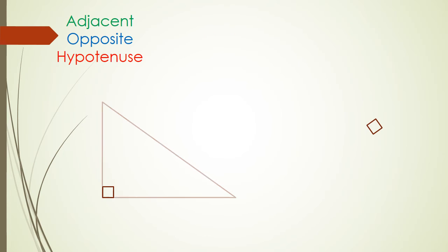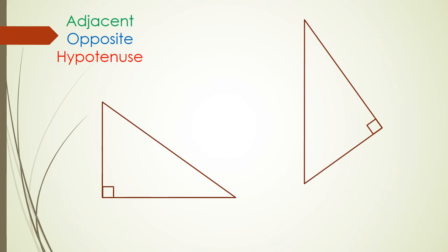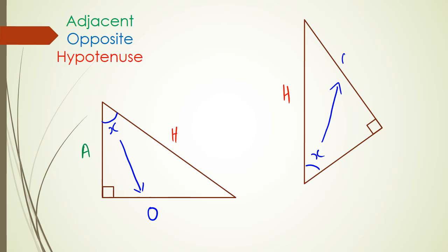Here are my two triangles. Let's say I put an angle of X here and an angle of X here. My hypotenuse is opposite the right angle, and opposite the angle is the Opposite side, and the side adjacent to the angle is Adjacent. On the right-hand side, the hypotenuse is the longest side opposite the right angle, the side opposite the angle is Opposite, and the side right next to the angle is Adjacent.